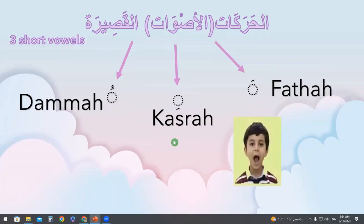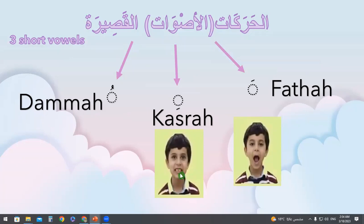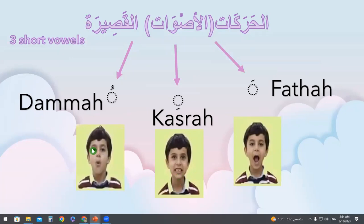The second short vowel means you take the letter down and your mouth will be in this shape. For example, if I have the letter Alif it will be 'e'. The last short vowel involves circling your mouth like this, giving the sound 'o' to the letter Alif and the rest of the letters.